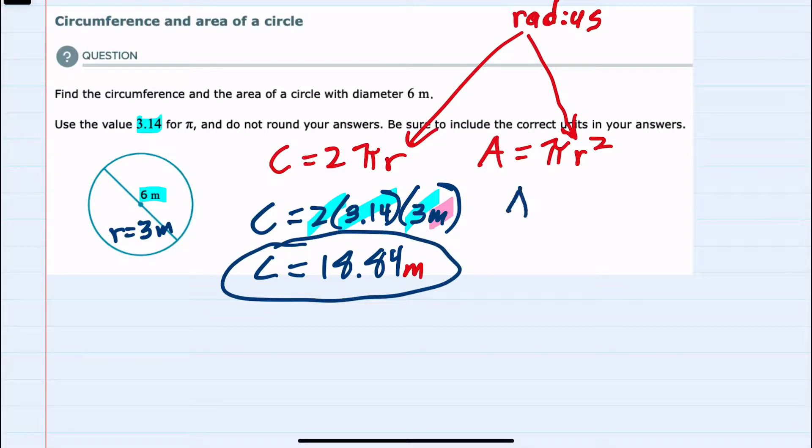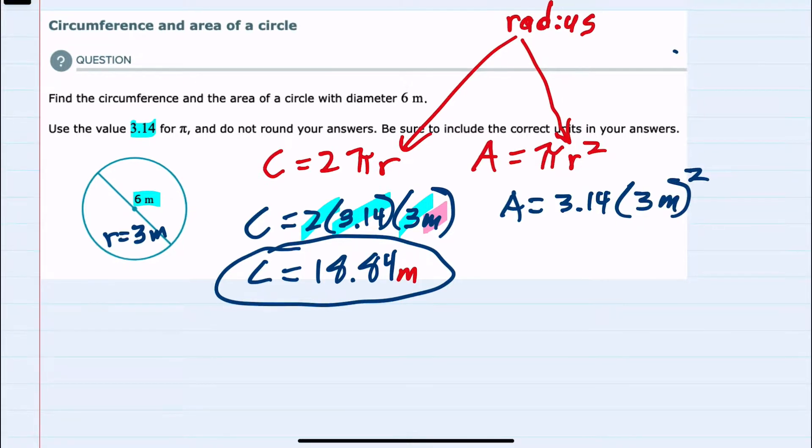And then for area, I have π, which again is 3.14, times the radius squared. Our radius is 3 meters squared.